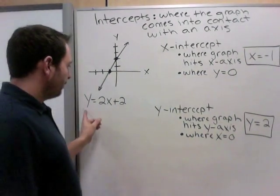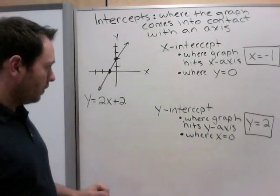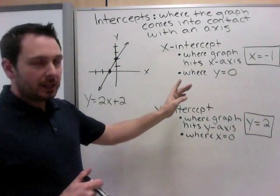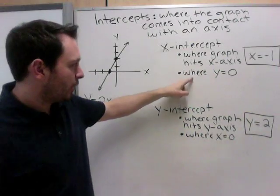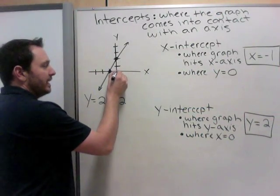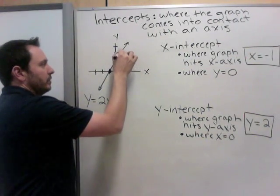So algebraically, from the equation. This equation represents this line. So here's how this is going to work. The x-intercept, when we think where the graph hits the x-axis, another way of saying that is where y equals 0. Because here is a height of 0. Here is a height of negative 1, negative 2. Here is a height of 1, 2, 3, so on and so on. So the height of 0 is here.